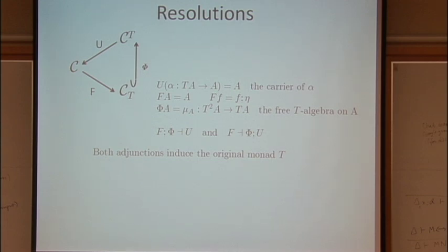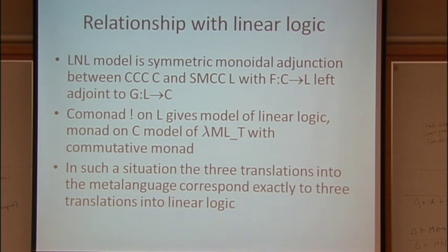And both of these adjunctions actually give you back the original monad. So remember, T was a functor from C to C. And if you go around here, then the composite F phi mu is the original T that you started with. So whenever you've got a monad, you can split it up into an adjunction, and that adjunction gives you back the monad. And you can split it up into an adjunction in at least two ways. So this is one way, and this is another way. And I shall stop there.